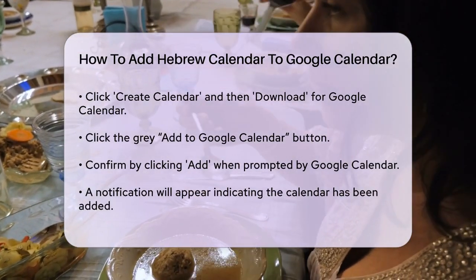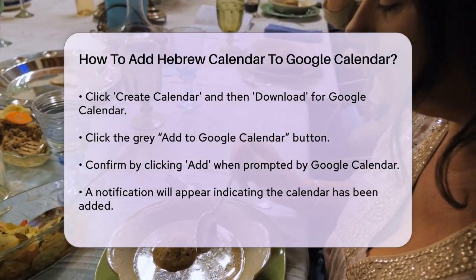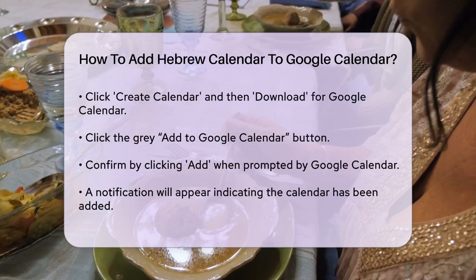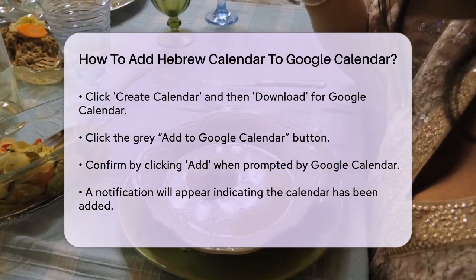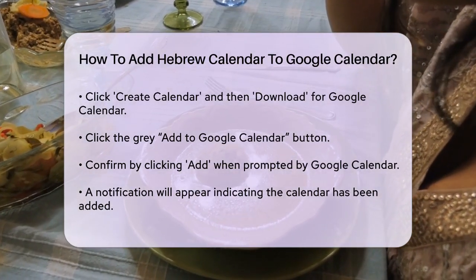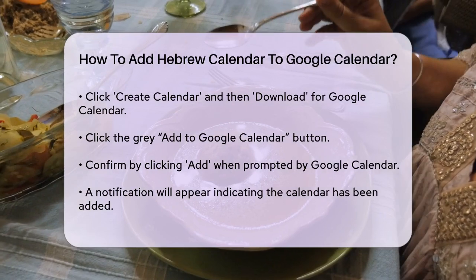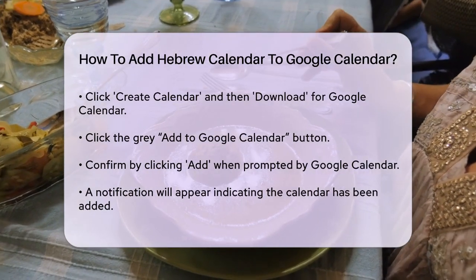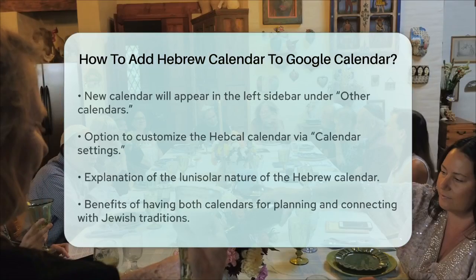If you need to make any changes, you can click on the HebCal calendar in the left sidebar and select Calendar Settings from the pop-up menu. This way, you can customize how the Hebrew calendar appears on your Google Calendar.